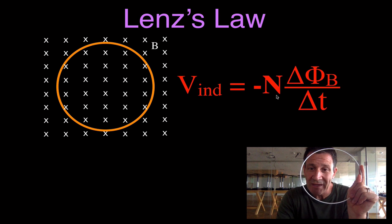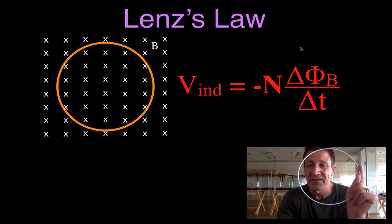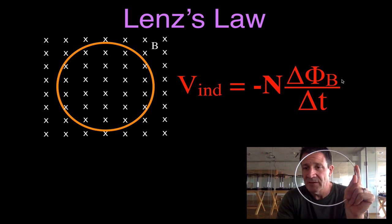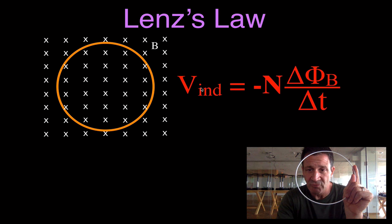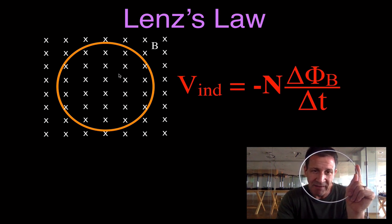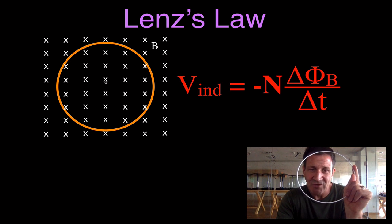Now, this equation you should recognize — this is not really Lenz's Law, this is Faraday's Law, which tells us that if we have a change in the magnetic flux over time through a coil with a certain number of windings, we're going to have an induced voltage. For example, we have a coil, a magnetic field directed into the page — if we change that magnetic field strength over time, we'll get an induced voltage.